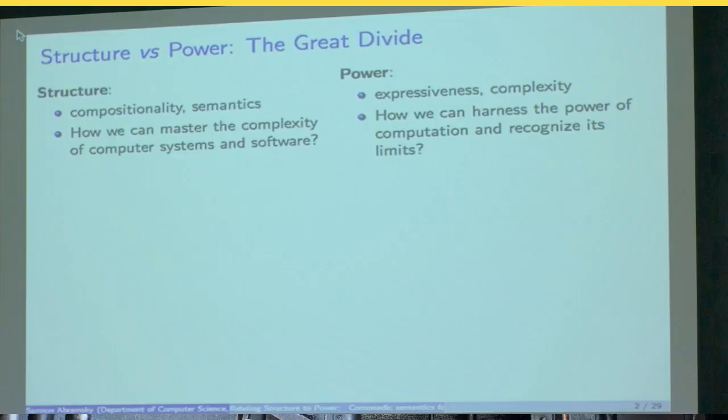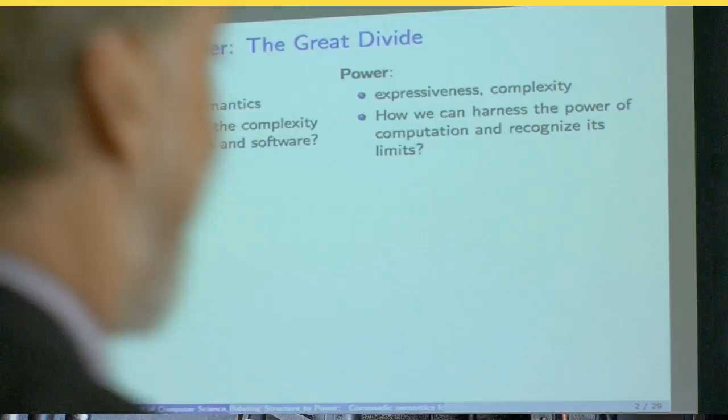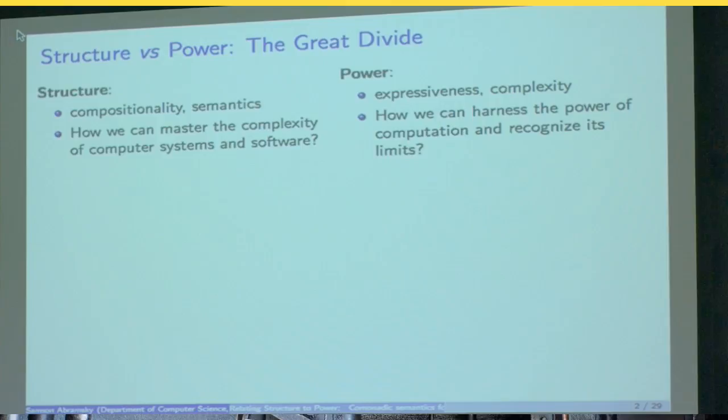But then over on the other side, and actually started, if anything, by considerably more people, and more perceived from outside as what computer science is fundamentally about, is what I'm calling the power side of things, which focuses on issues of expressiveness and complexity, and emphasizes how we can harness the power of computation and recognize its limits. And this is the arena, certainly of algorithms and complexity, but actually even within logic for computer science, for example, that is what the focus of many people working in logic and automata, verification, and databases, and other such things is.